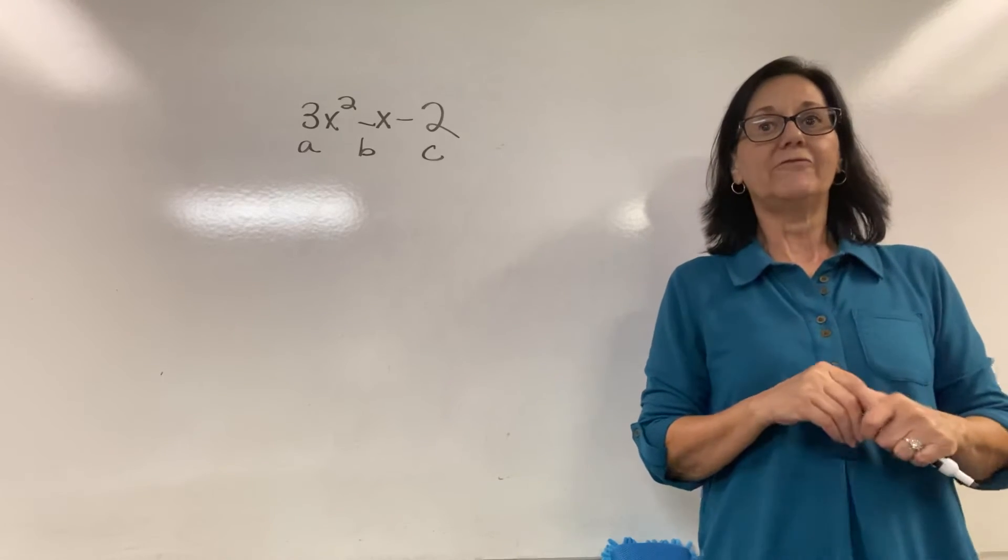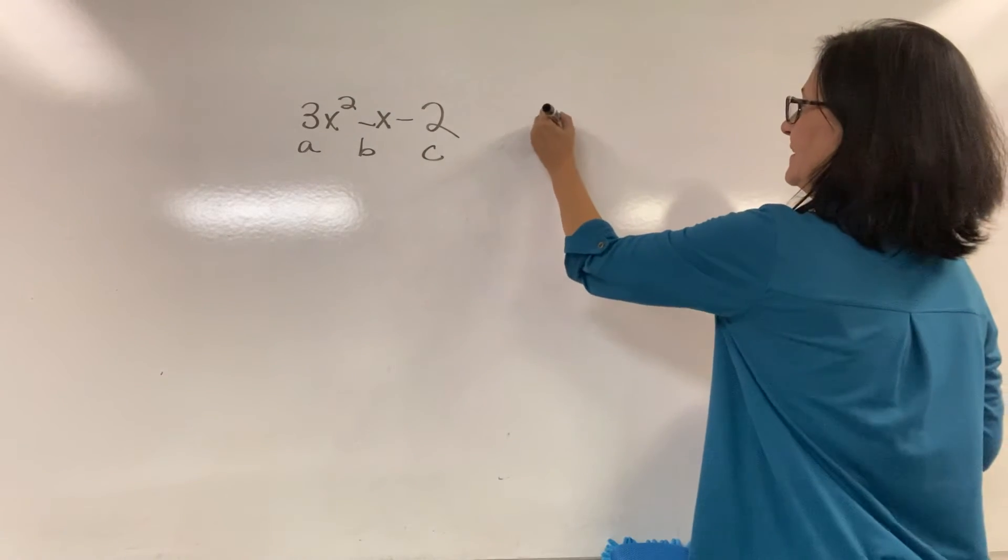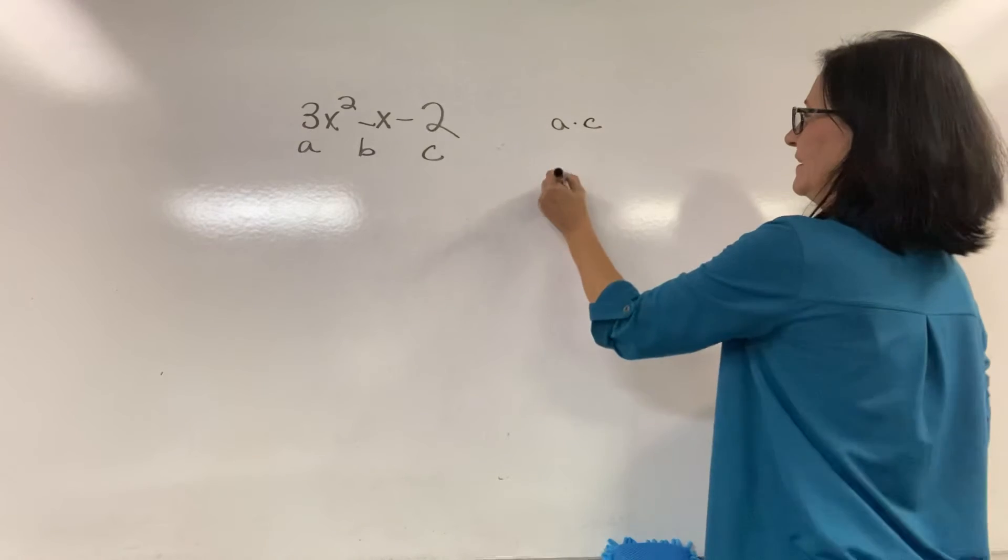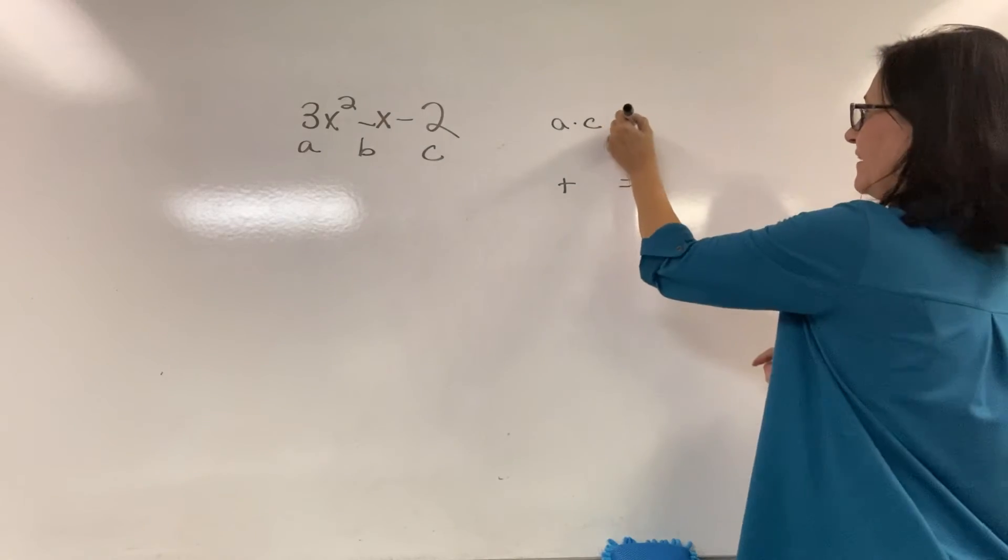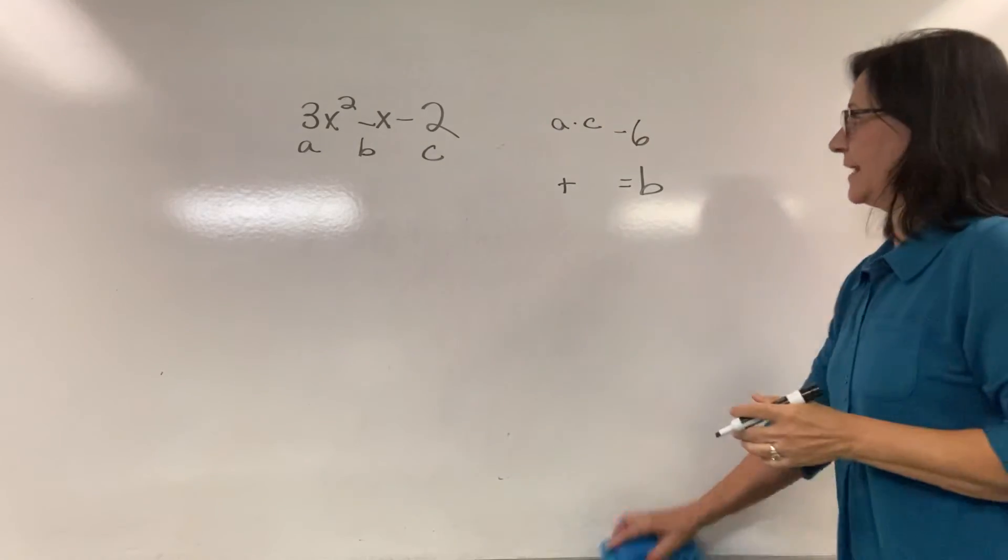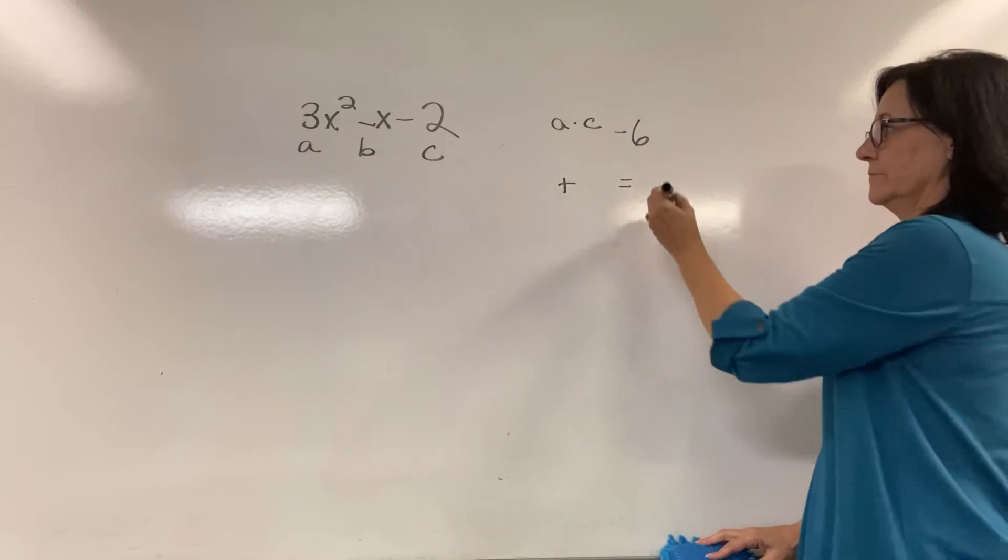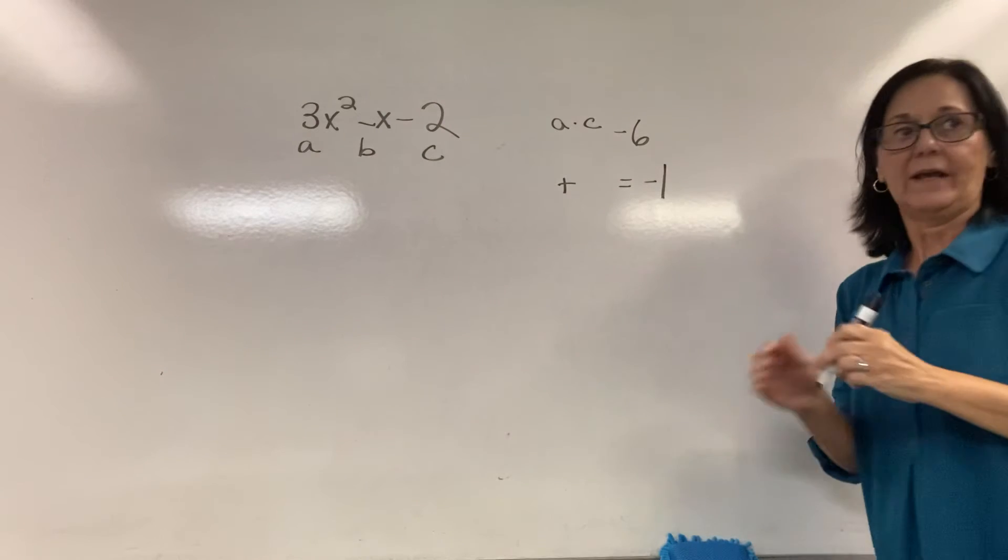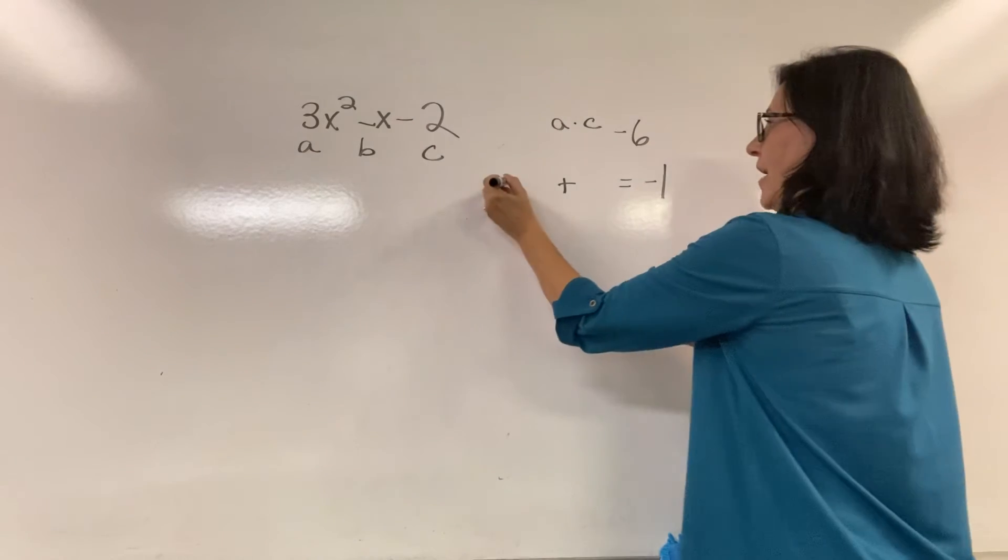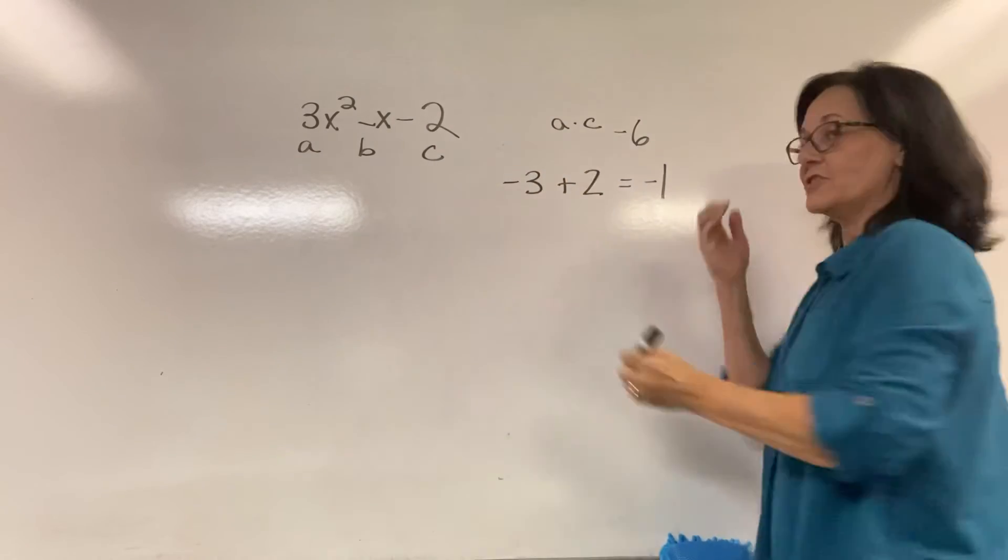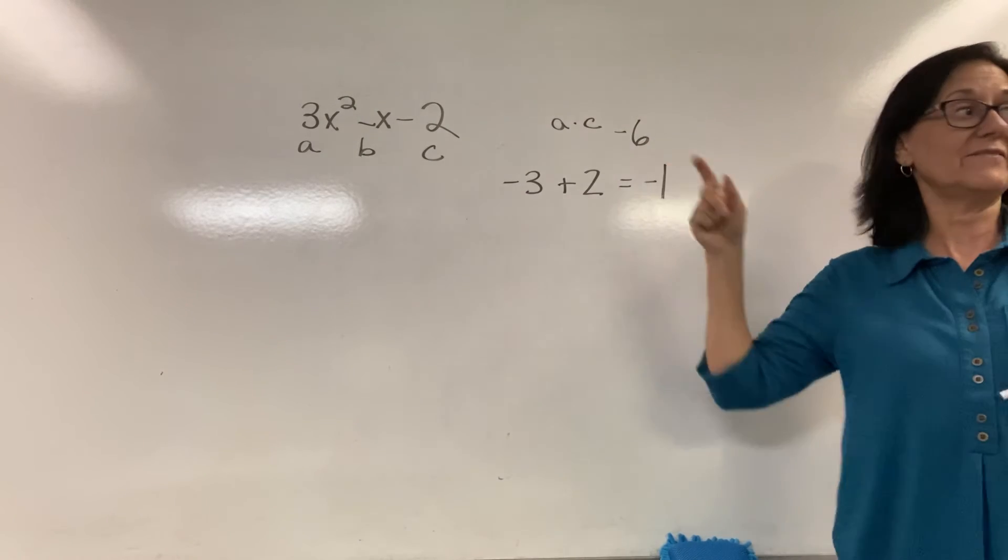Now we're looking for the factors of a times c such that when added, they equal b. What's a times c? Negative 6. They multiply to equal negative 6, but added they equal negative 1. If you do negative 3 plus 2, it would equal negative 1. Negative 3 times positive 2 equals negative 6.